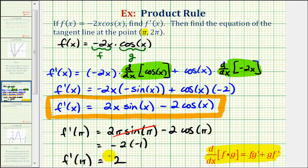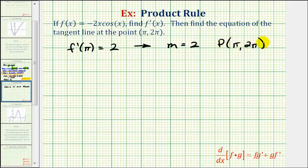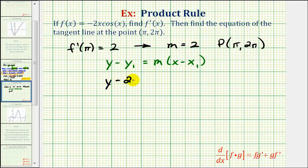Now that we know the slope of the tangent line is positive two, and the line passes through the point pi comma two pi, we can find the equation of the tangent line. We'll use the point-slope form of the line, which is y minus y sub one equals m times x minus x sub one, where m is the slope of the line, and x sub one, y sub one are the coordinates of the point on the line. This gives us y minus two pi equals two times x minus pi.